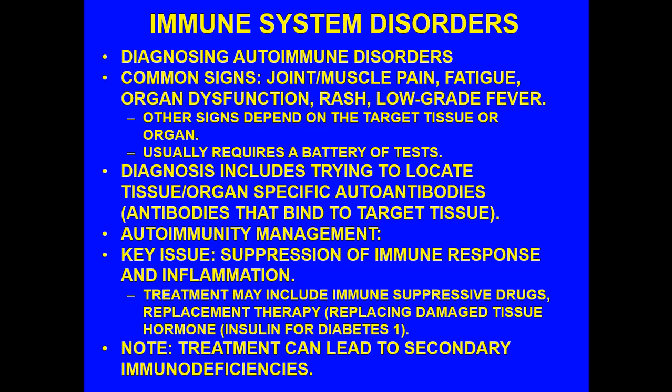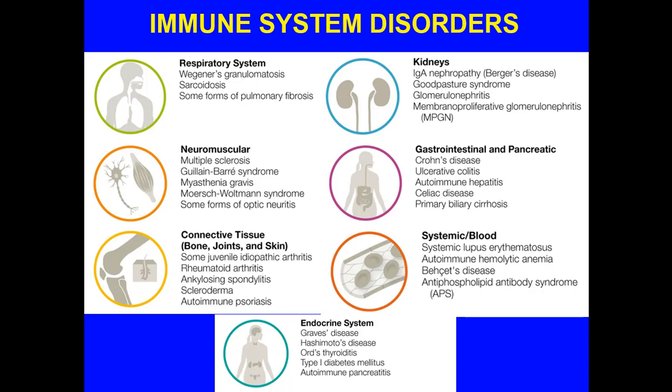This chart brings together the different areas affected by autoimmune disorders — whether the endocrine system, connective tissue, bones and joints, skin, neuromuscular system, blood, gastrointestinal and pancreatic system, kidneys, or the respiratory system — there is some form of autoimmune disorder that exists. You don't need to memorize everything, but get familiar with some of them because you'll likely see them frequently in allied health, medical, and nursing training.